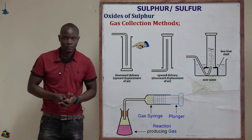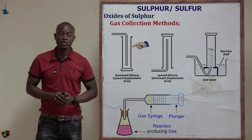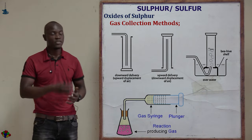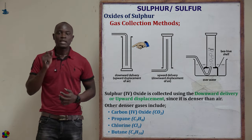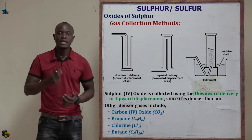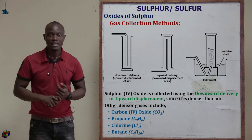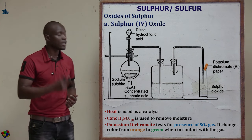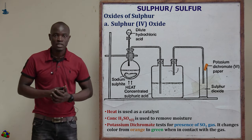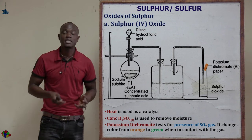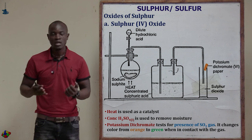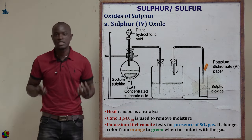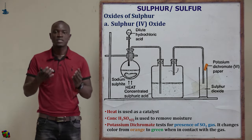Sulfur dioxide is collected using the downward delivery method or the upward displacement of air. Other gas collection methods include the over-water method and the upward delivery. Sulfur(IV) oxide is collected using the downward delivery method because it is denser than air. Potassium dichromate paper is placed at the mouth of the gas jar; it will change color from orange to green, indicating the gas jar is now full of sulfur dioxide.